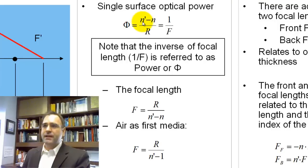So power is the difference in index between the two media divided by the radius. And the power is actually the inverse of focal length. And we'll be talking about power a little bit later. We're going to predominantly use focal length. So the focal length is really the radius of curvature divided by the differences in index of refraction. If your first media, this media here is in air, your focal length is simply your radius of curvature divided by your index minus one.